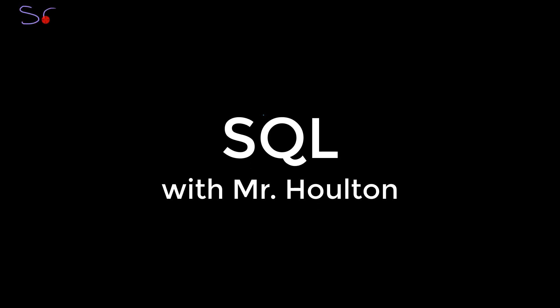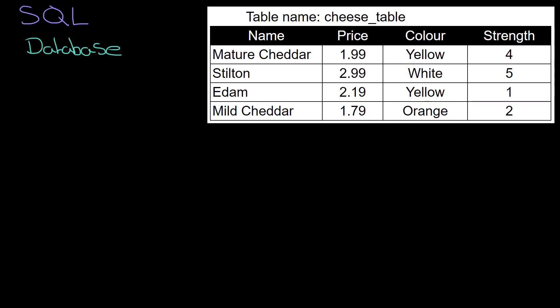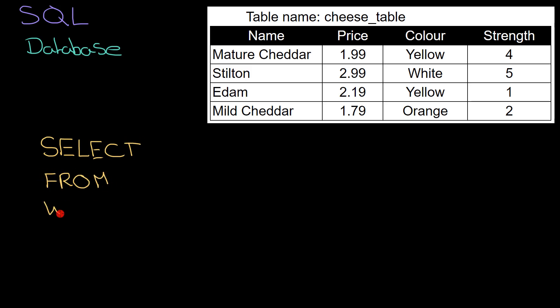When computers need to store a lot of information they do so in something called a database. A database has a lot of different tables of information in it, just like the one on the right hand side that you're seeing now. This table here contains information about different types of cheeses. SQL is used like a programming language to pull out information from that table. There are three words to remember above everything else: SELECT, FROM, and WHERE.